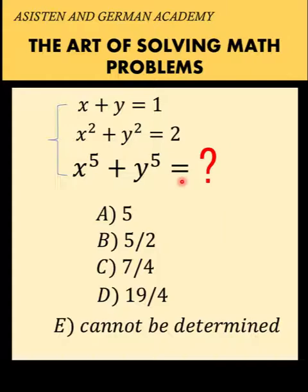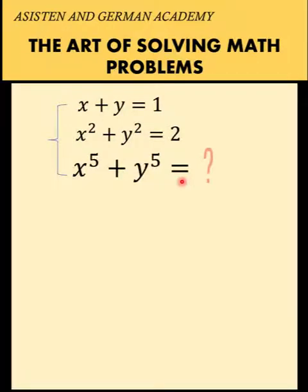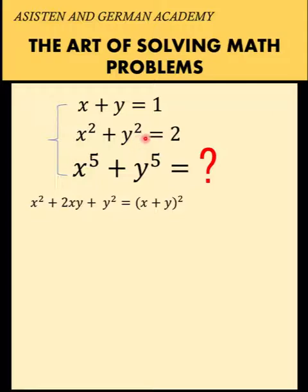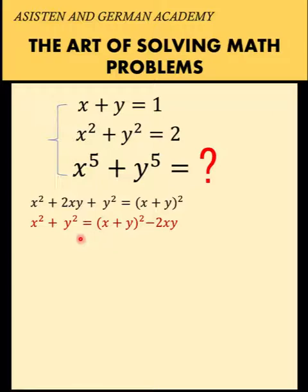Let's solve this problem together. Let's begin by recalling that the square of a binomial is expanded as the square of the first term, plus twice the product of the first and second terms, plus the square of the second term. Since we have x squared plus y squared, let's represent this as x squared plus y squared.